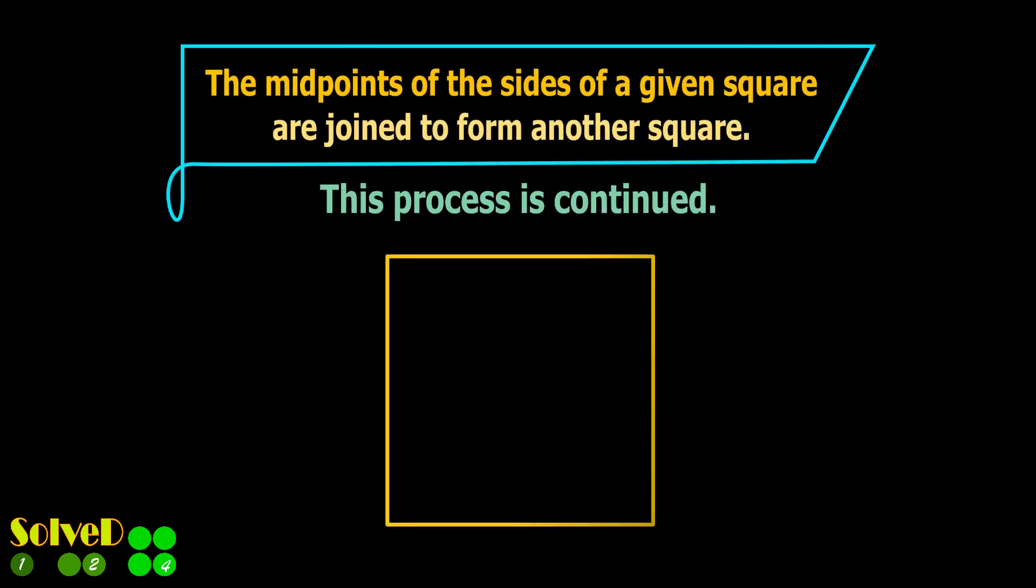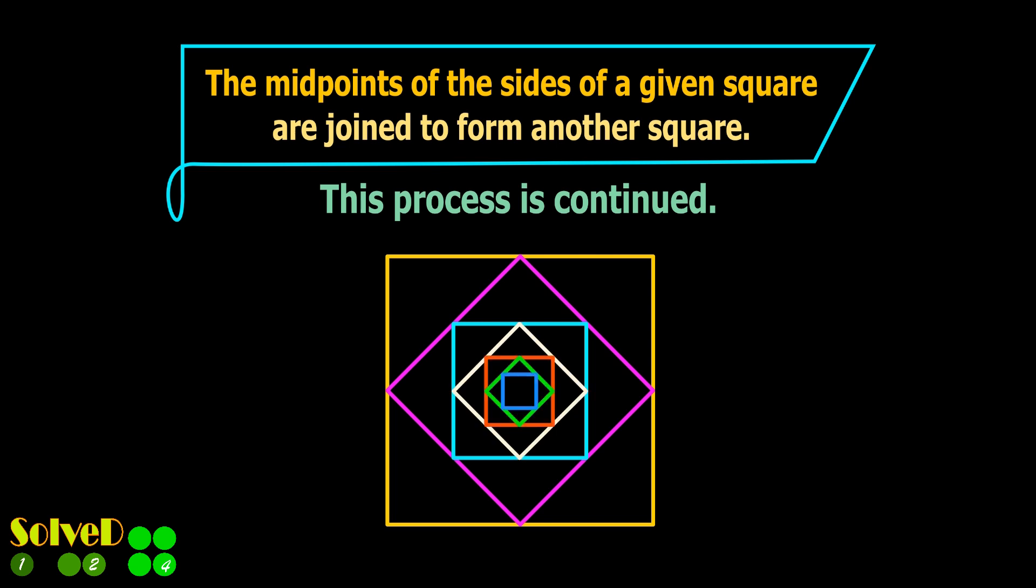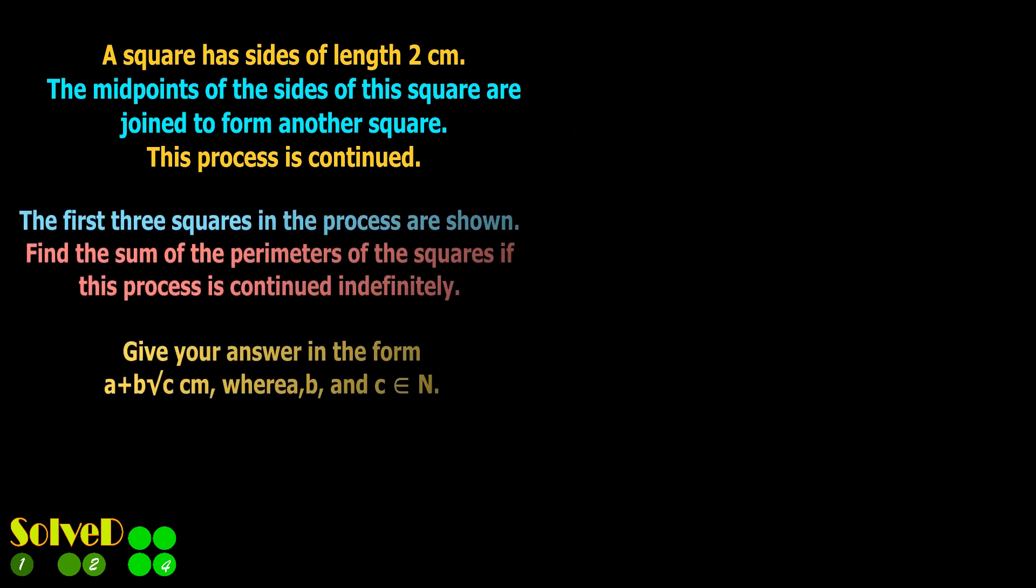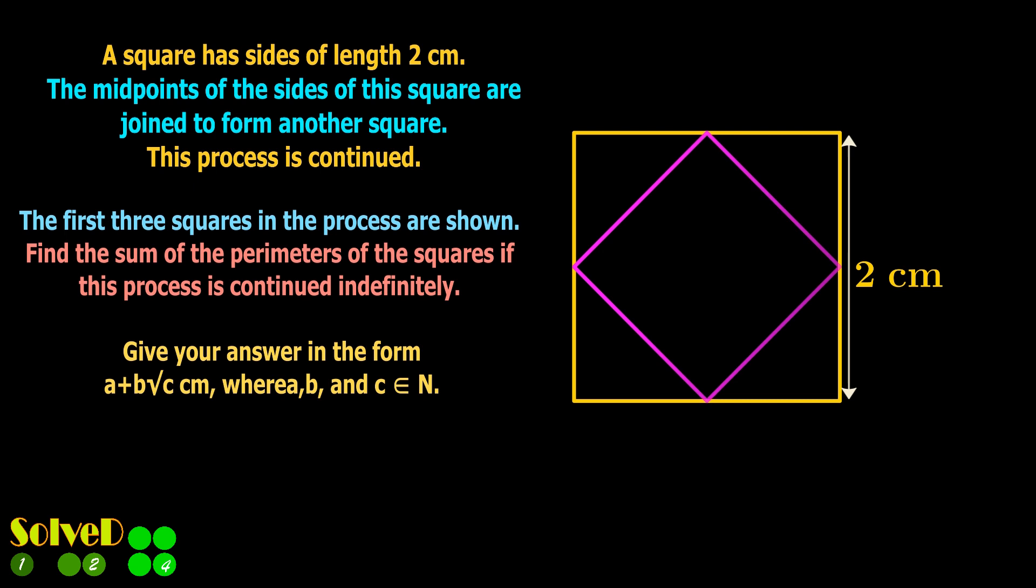The midpoints of the sides of the square are joined to form another square. This process is continued. The first square has sides of length 2 cm. The first three squares in the process are shown. Find the sum of the perimeters of the squares if this process is continued indefinitely.